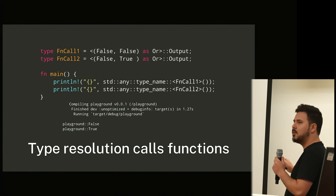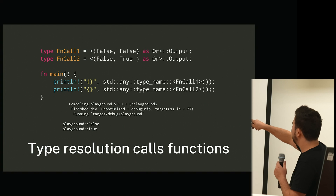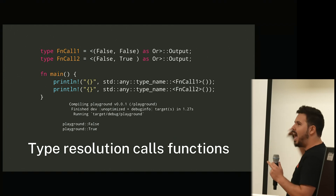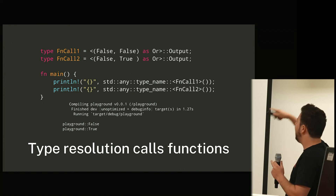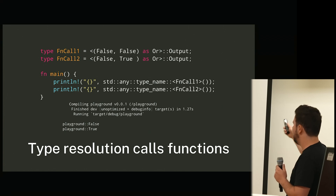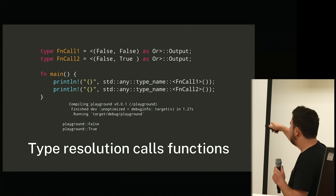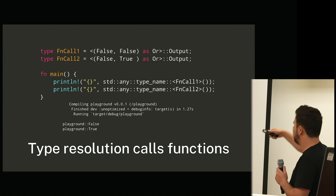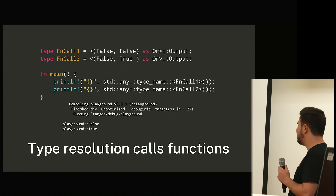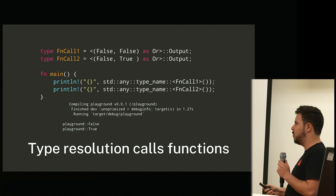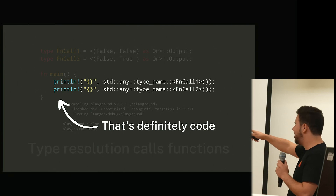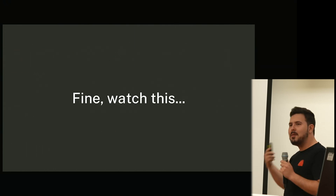Type resolution calls our functions. See at the top: type FunctionCallOne equals the tuple of False and False — as it implements Or, what is the Output? What is the associated type Output of that? And similarly with false-true as Or, what's that output? If I print out the name of those types using std::any::type_name of FunctionCallOne and FunctionCallTwo, you'll see playground::False and playground::True. And you might go — wait, hold up, that's code, you cheated!